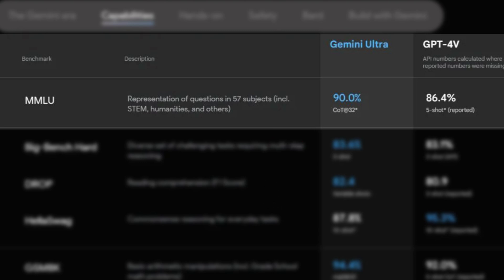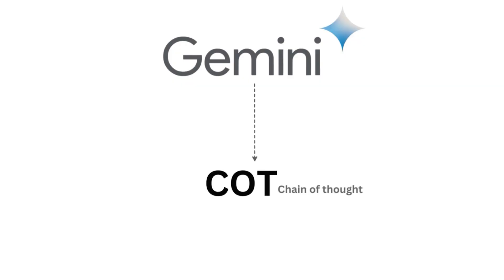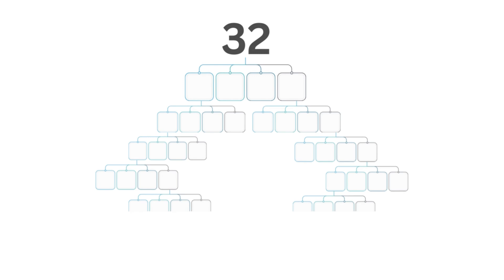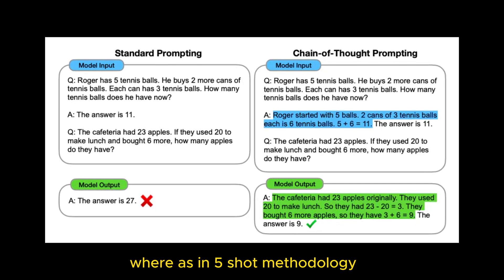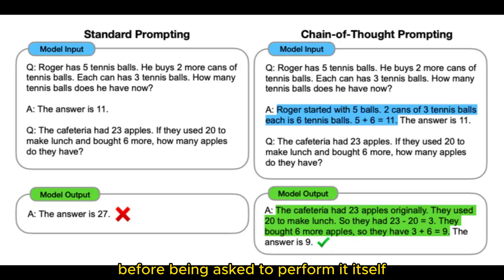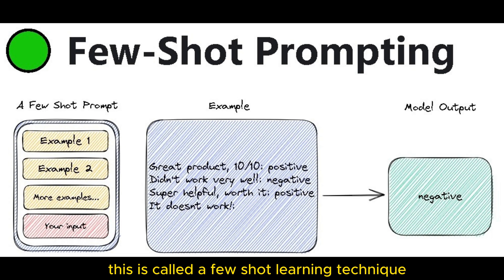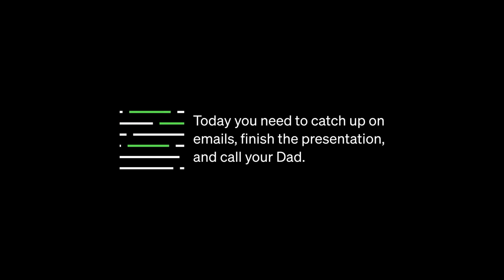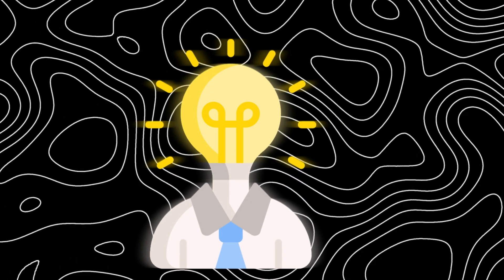But if you look under these two numbers, on MMLU benchmarks are two different things. Google Gemini used the Chain of Thought Prompting Technique, whereas GPT-4 used the 5-Shot Prompting Technique. COT stands for Chain of Thought and 32 means it goes through 32 reasoning steps before choosing an answer. Whereas in 5-Shot Methodology, the model is given five examples of a particular task before being asked to perform it itself. This is called a Few-Shot Learning Technique, and it helps assess how quickly and effectively GPT-4 can learn and adapt to new challenges. And that is something you guys should be aware of.